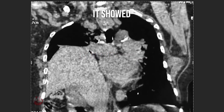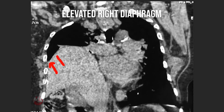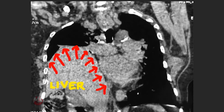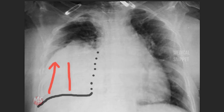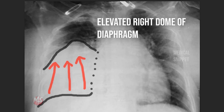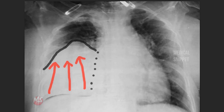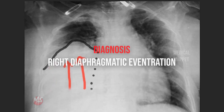To differentiate between these two things, we did a CT thorax. It showed elevated right dome of diaphragm. Looking at the chest X-ray again — this is the assumed normal position of the diaphragm, this is the right heart border, and this is the elevated right dome of diaphragm. So it confirmed this is a case of right diaphragmatic eventration.